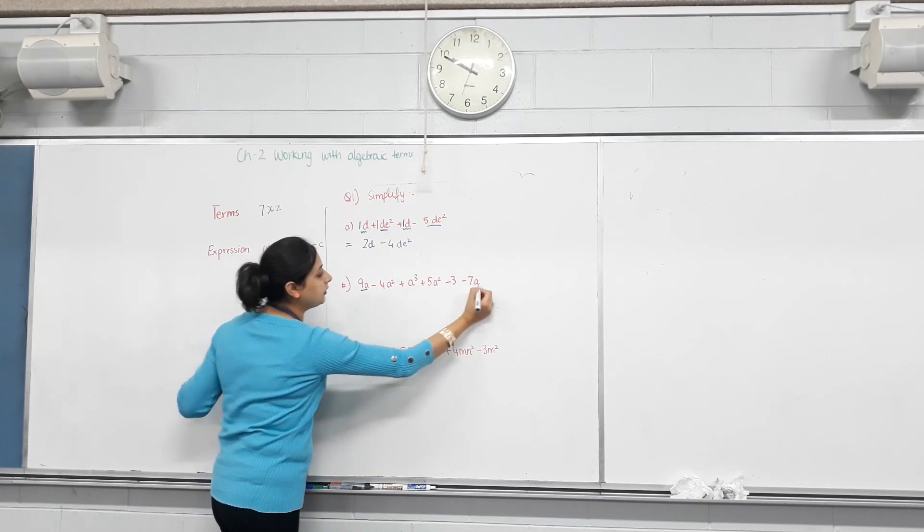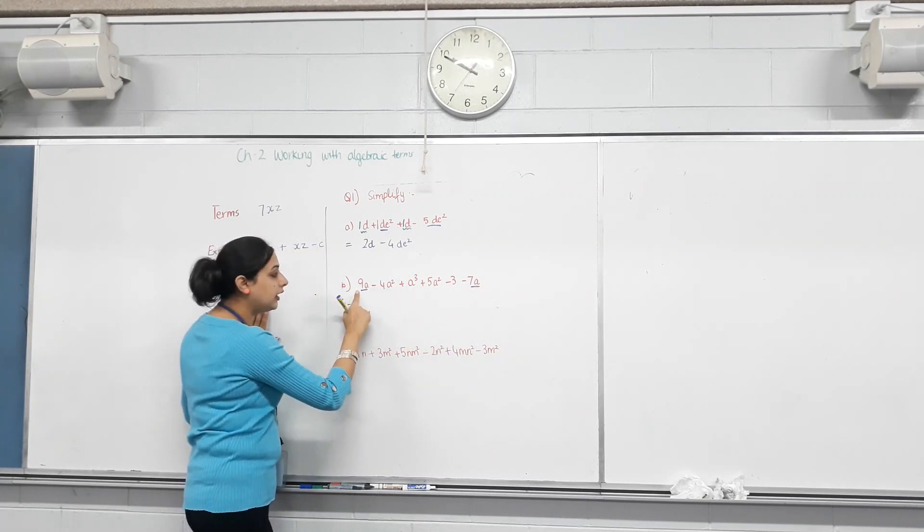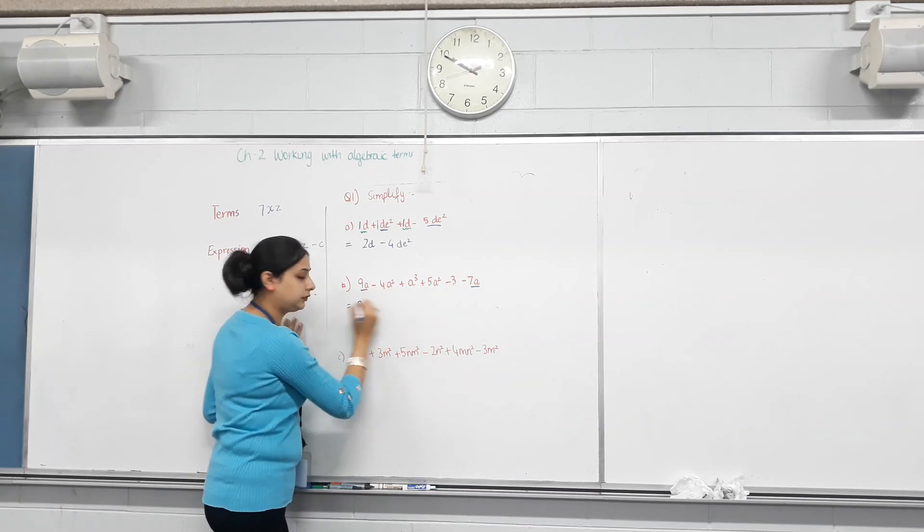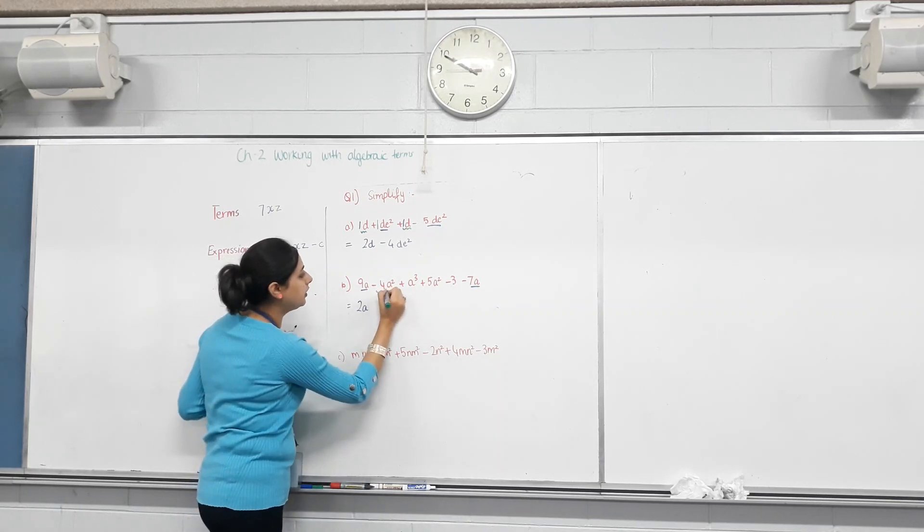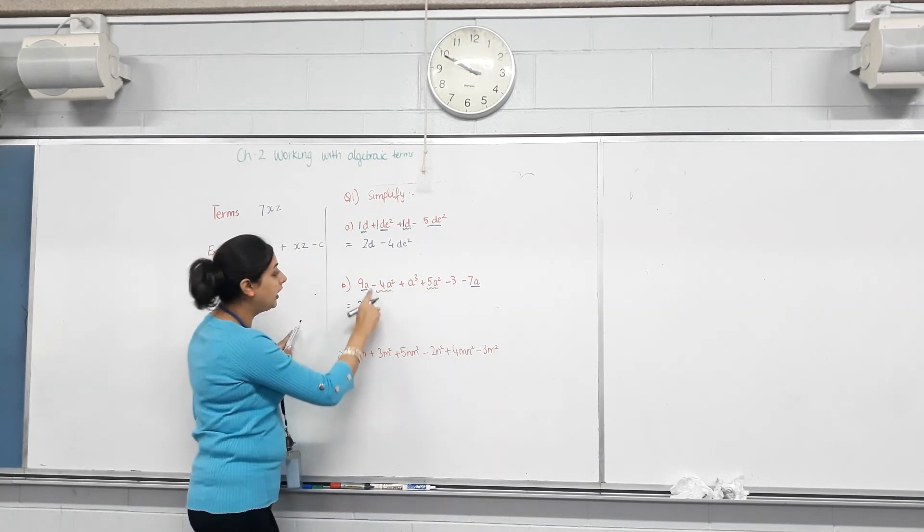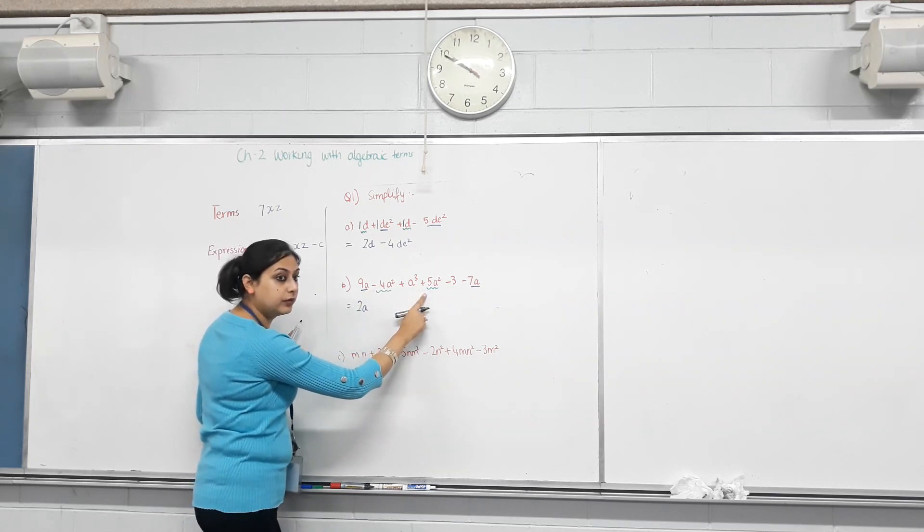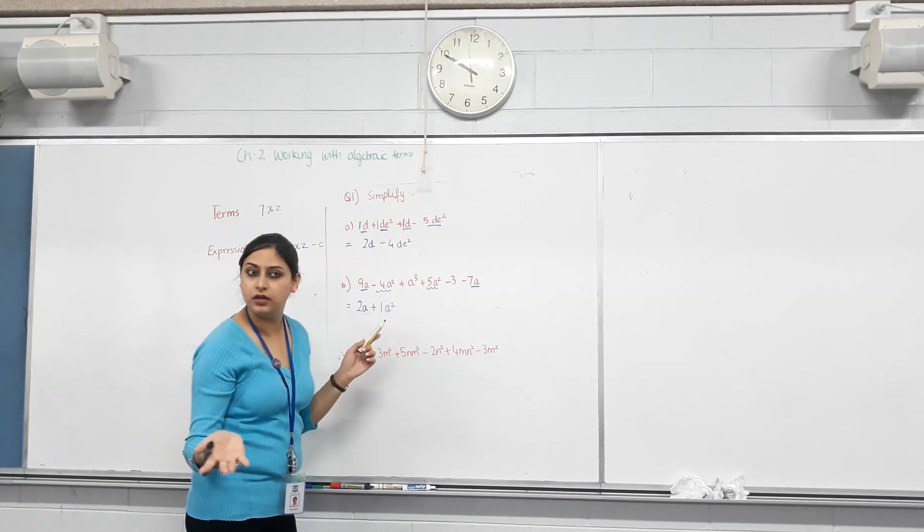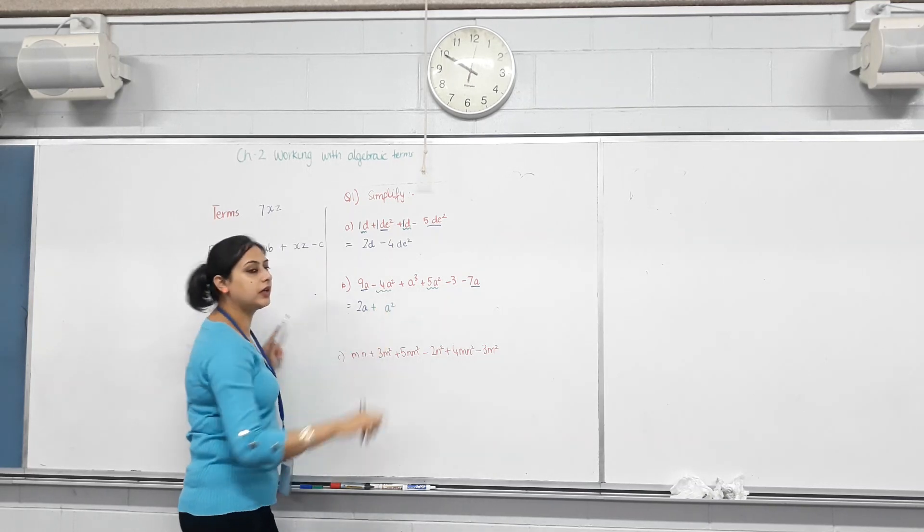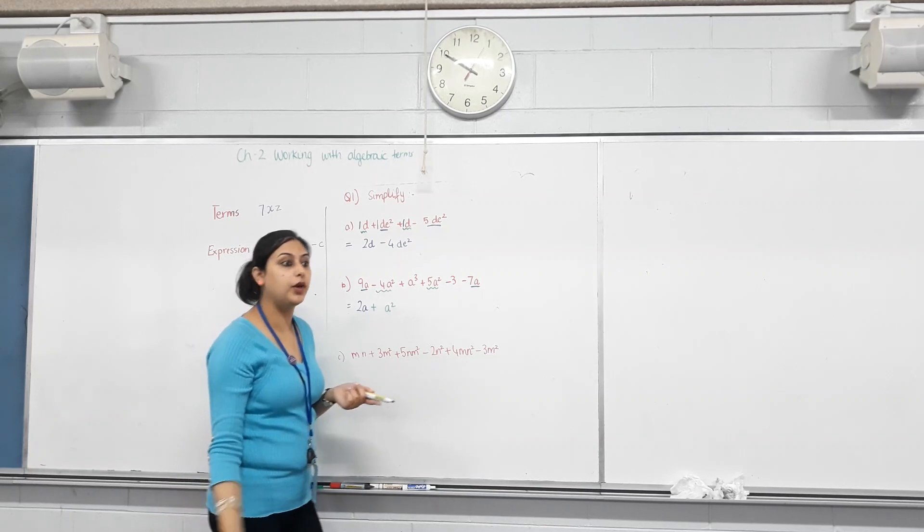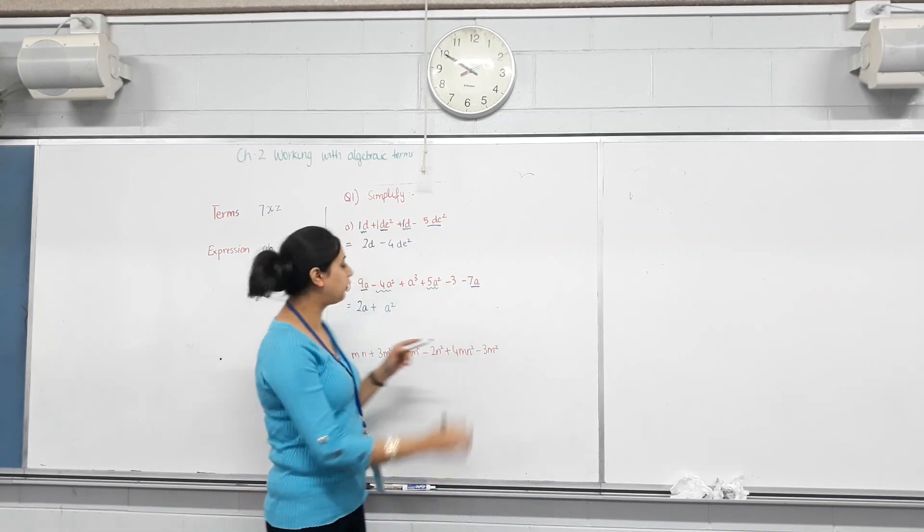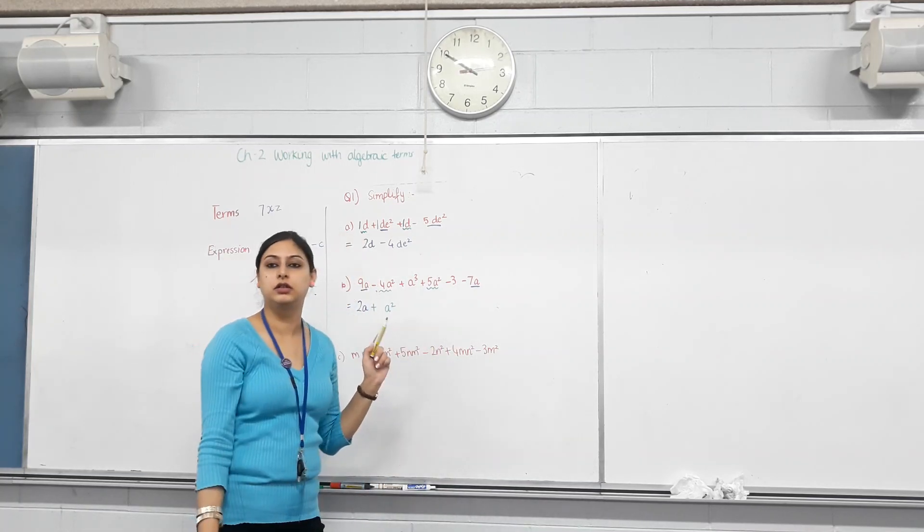Next one. Nine A. Any other A term? Yes. So nine A and minus seven A. So nine take away seven is? Two. Two A. Now, move on to the next one. A squared and A squared. Like terms? Negative four plus five. What is that equal to? Plus one A squared. Now, does it look pretty, one A squared? No. So let's make it pretty. Just leave it as A squared. We don't need to write one A squared. If you have an apple, don't you say I have an apple? You don't say I have one apple. Just sounds nicer. So we don't write one A squared, we just say we have an A squared.